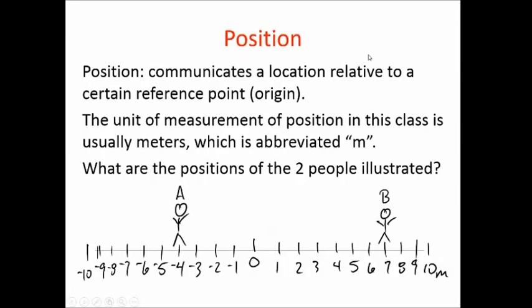Position is where you are. I am sitting in a chair in my classroom — that is my position. We're going to measure almost everything in class with meters. So the position of this person is minus 4 meters. We've picked this spot here to be 0, and we measure relative to that. This person is at position minus 4, and that person is at position 7.